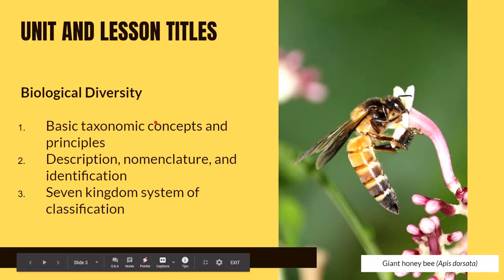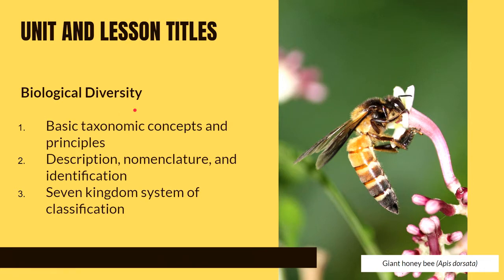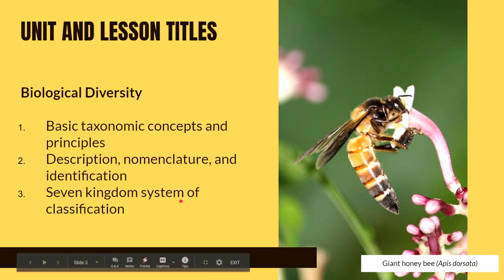In this series, we will focus on biological diversity. Those topics would include basic taxonomic concepts and principles, description, nomenclature and identification, and the Seven Kingdoms system of classification.